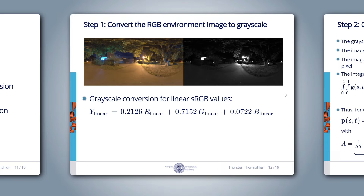Step 1: convert the RGB environment image to grayscale. Our environment map has three color channels. We could perform our approach on each channel separately, but that would take three times longer. Therefore, we convert the environment map to grayscale and use the grayscale value as our incoming radiance. As discussed in episode 4, we need gamma expansion to get linear RGB values. In linear RGB space, the linear luminance is a weighted sum: 0.2126*R + 0.7152*G + 0.0722*B.